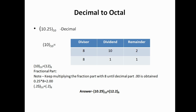Since we reached 0.00, we stop multiplying. The digit before the decimal point is 2, so the fractional octal part is 0.2. Therefore, 10.25 base 10 converts to 12.2 base 8. This process is very similar to decimal-to-binary conversion, except we divide and multiply by 8 instead of 2. Next, converting octal to decimal is similar to binary to decimal, but we use base 8 as the multiplier.